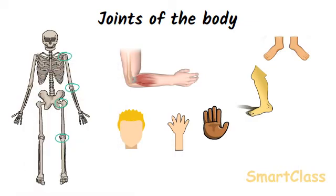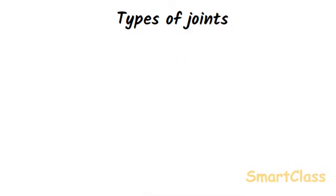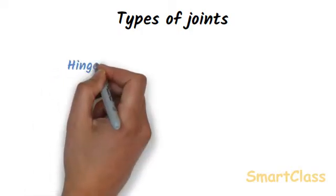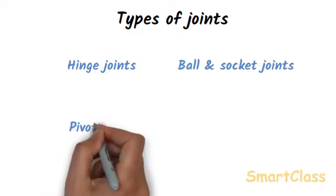We can move our head, arms, hands, legs, and feet because all these parts have bone joints. In freely movable joints like elbow, knee, shoulder, and hip joints, the ends of bones forming the joints are held in place by a strong connective tissue called ligaments. The ends of the joints are covered with a soft, smooth layer of cartilage. There is also a thick oily liquid between the ends of bones in freely movable joints, which allows lubrication. The main types of joints are hinge joints, ball and socket joints, pivot joints, and fixed joints.